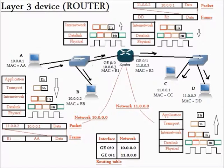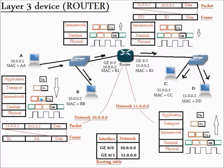Our target in this example is to make computer A send data to computer D. First, computer A will take the data from the application layer and send it to the transport layer. The transport layer will add its header to the data and send it to the internetworking layer. The internetworking layer will add its header to form the internetworking packet, and this packet will be sent to the data link layer, which will add its header before the electrical signal is sent over the cable.